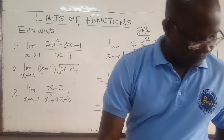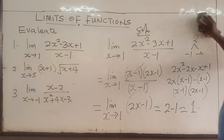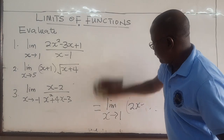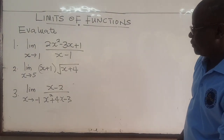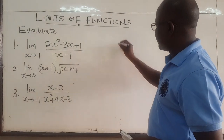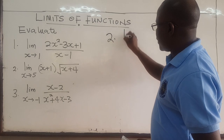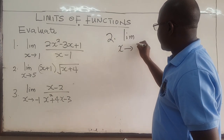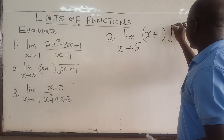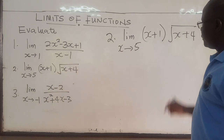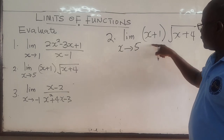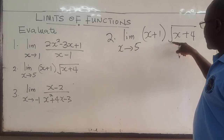Let's look at the second one. We want to find the limit as x approaches 5 of (x plus 1) times the square root of (x plus 4). In all of these we are applying the laws of limits. It's a product, and 5 is in the domain of both (x plus 1) and the square root expression, so you can find the limit of each factor separately.